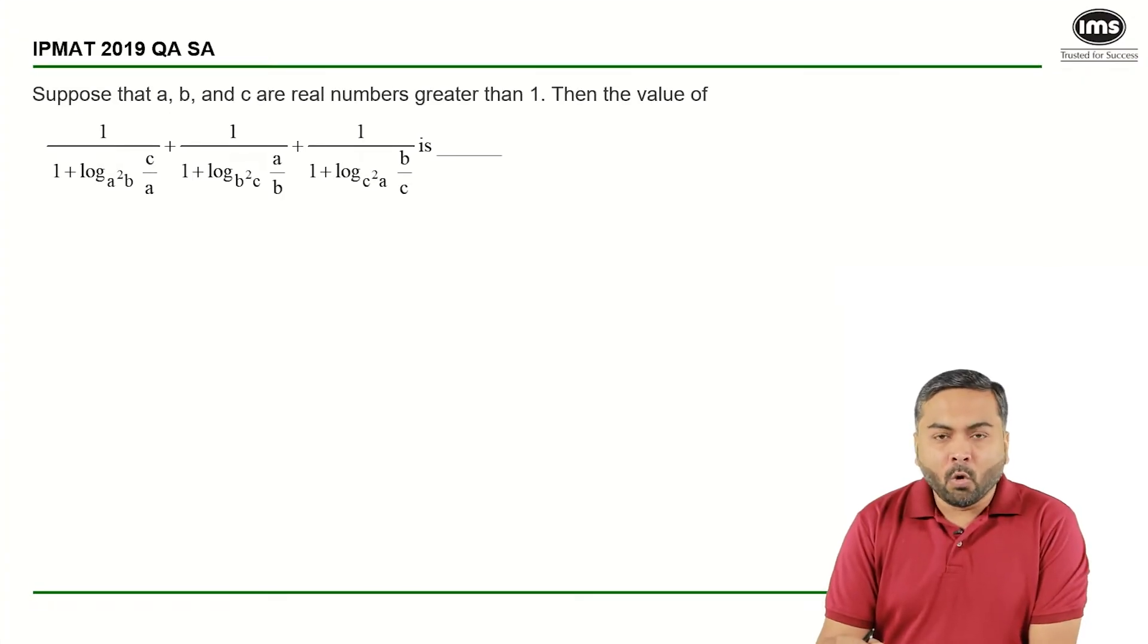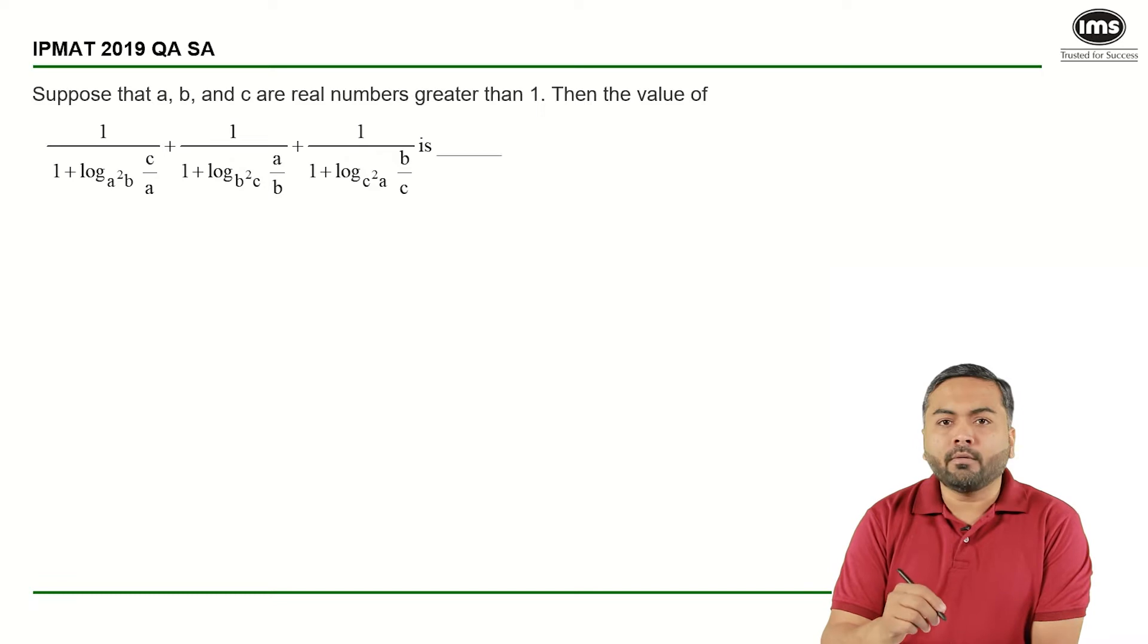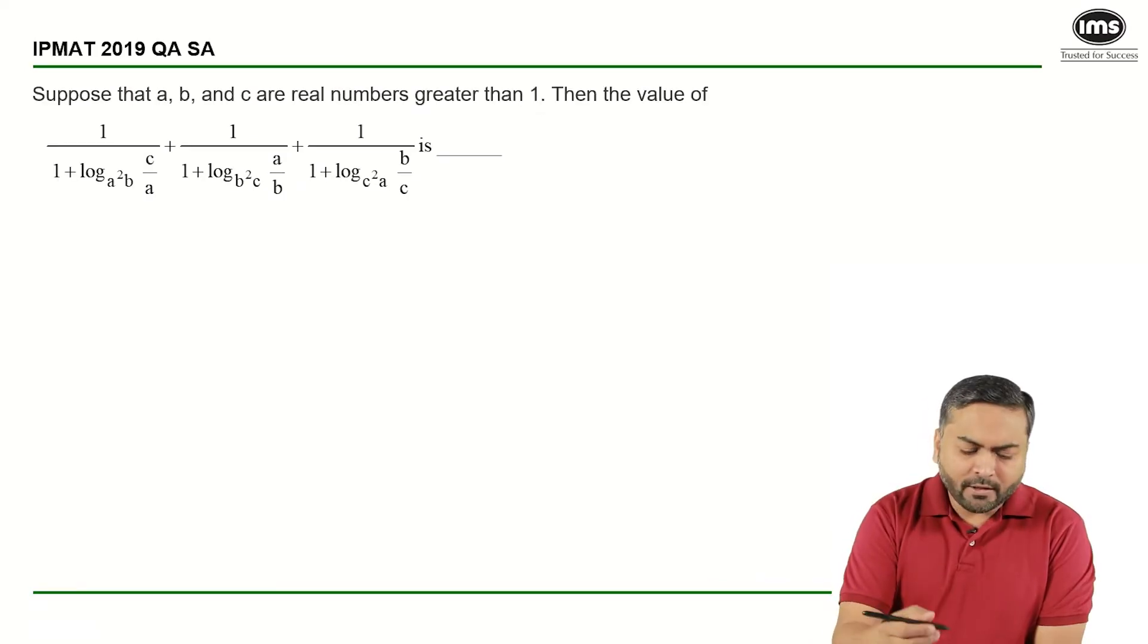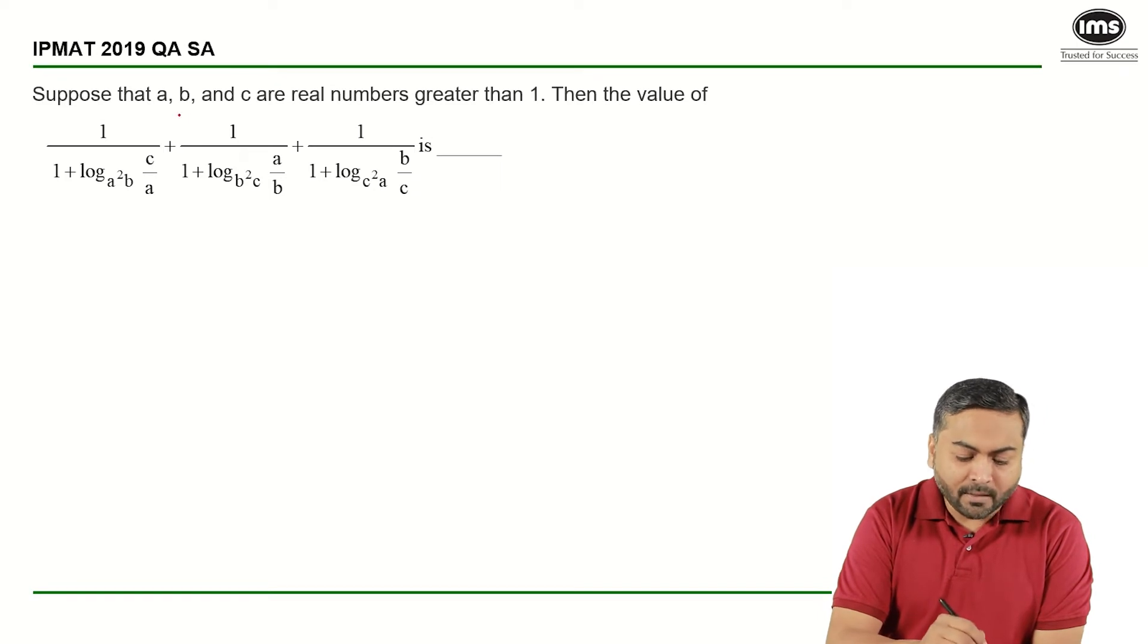Hello everyone, welcome to the series of Best of IPMAT. This particular question is IPMAT 2019 QA short answer section. If you look at this question, it's given that a, b, c are real numbers greater than 1.